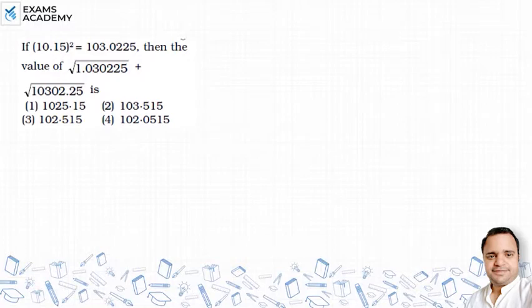Hello friends, I will solve this problem. What is the question? If 10.15 to the power 2 is equal to 103.0225, then find the value of under root 1.03025 plus under root 10302.25.